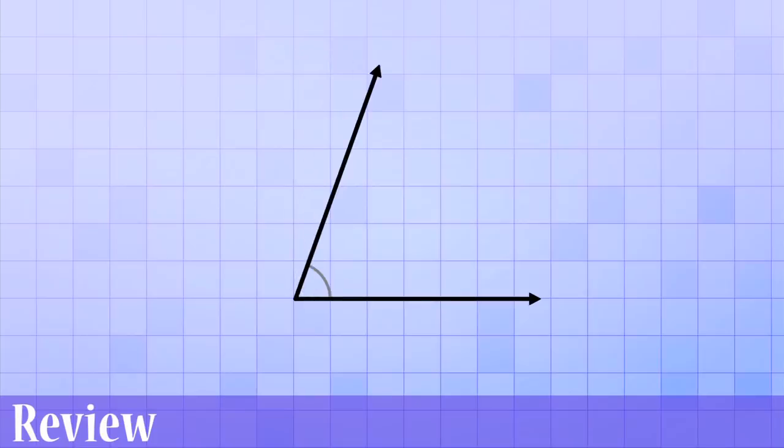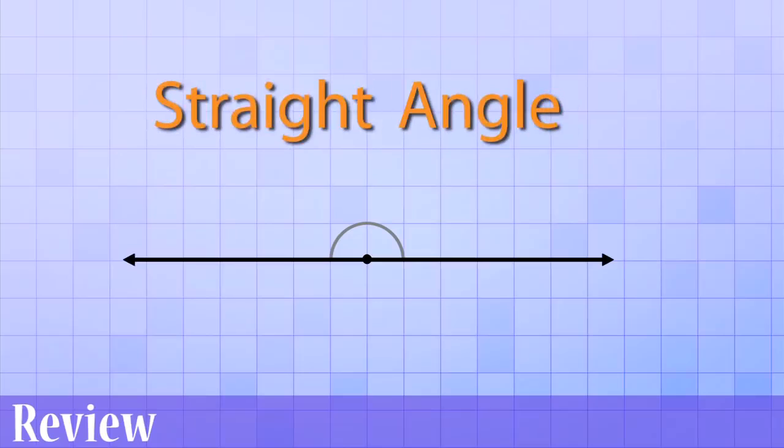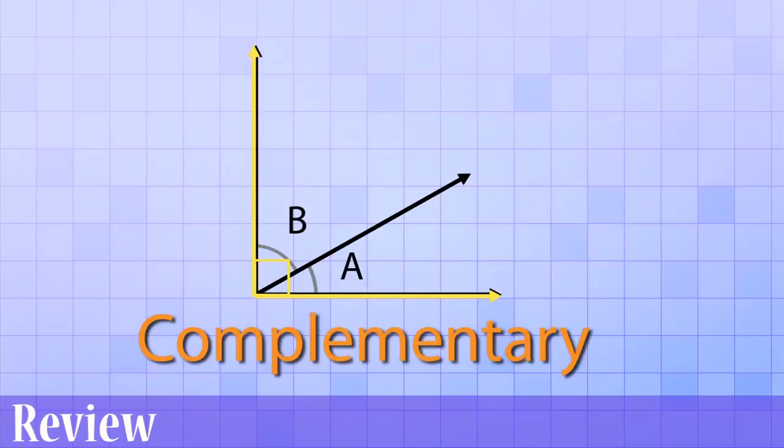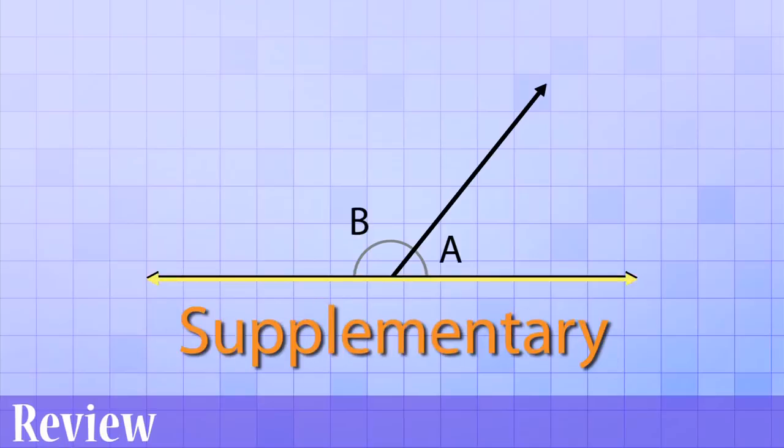An angle that's smaller or less than a right angle is called an acute angle. An angle that's bigger or greater than a right angle is called an obtuse angle. A straight angle is formed by two rays pointing in exactly opposite directions. A straight angle is really just a straight line. Two angles that combine to form a right angle are called complementary angles. Two angles that combine to form a straight angle are called supplementary angles.